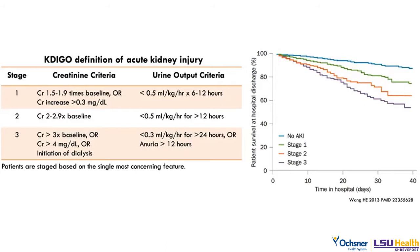Why stage? Patients who had no AKI had much less mortality, similar to the Alberta study. Stage 1 AKI had a little higher hospital mortality, and stage 3 AKI had almost close to 50% mortality within a month of diagnosis. Diagnosing AKI and labeling according to the elevation of creatinine has prognostic significance. We should be more diligent in recognizing AKI early and then trying to reverse the cause.